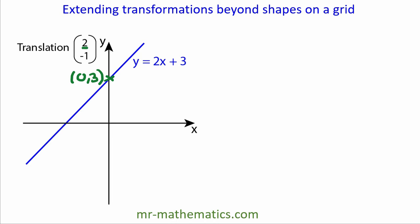We'll translate it 2 to the right, so it becomes (2, 3), and 1 down, so it becomes (2, 2).